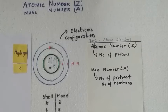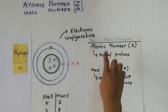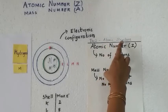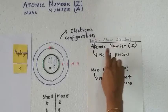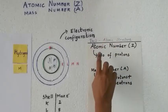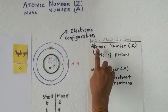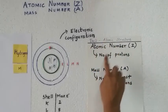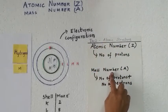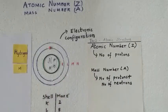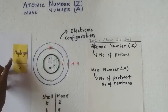Good morning students. Today we will continue with the same topic in chemistry, which is atomic structure. We will learn two important terms: atomic number and mass number. We will proceed with the first example — the first element in the periodic table, which is hydrogen, represented with the symbol H.